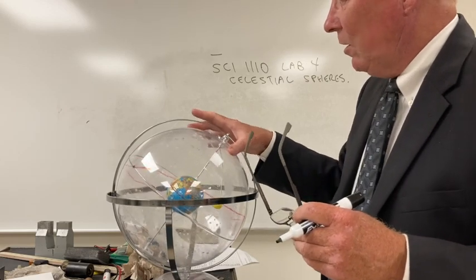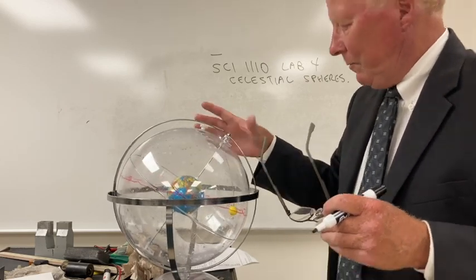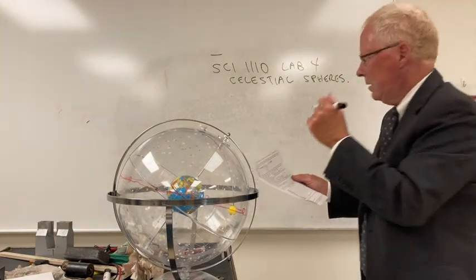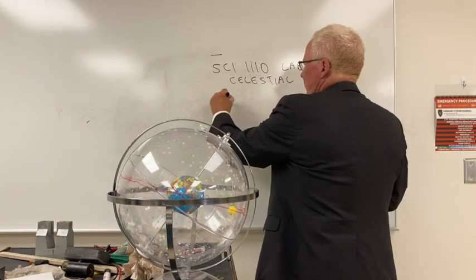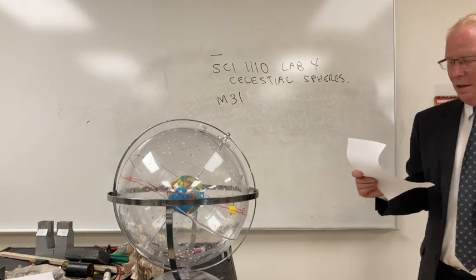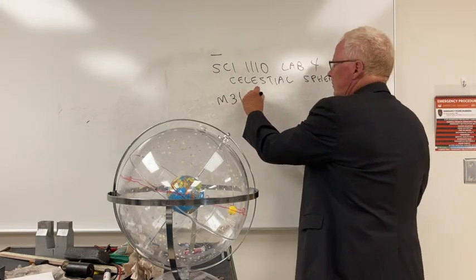What we have here are different constellations. I'm going to, since we're doing this lab online, I'm going to go through this and help you in the first part. M31 is in the constellation Andromeda.